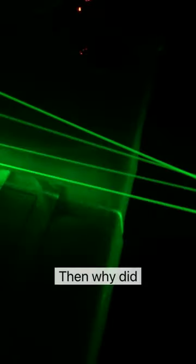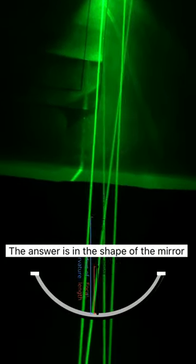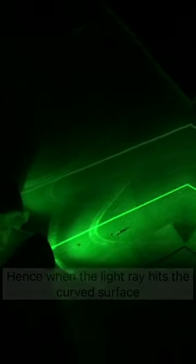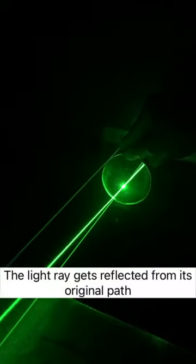Then why do those light rays meet after reflection? The answer is in the shape of the mirror. The curved portions of the mirror reflect the light in different directions. Hence, when the light rays hit the curved surface, they get reflected from their original path.